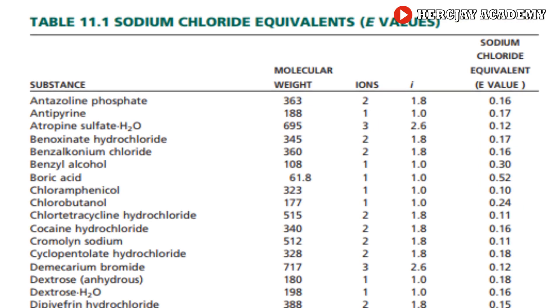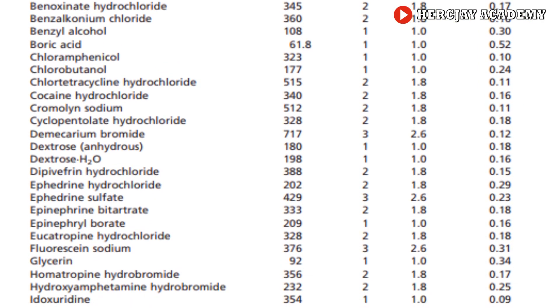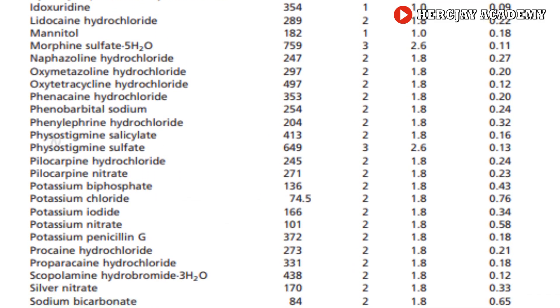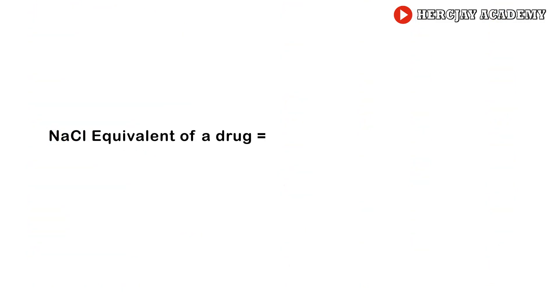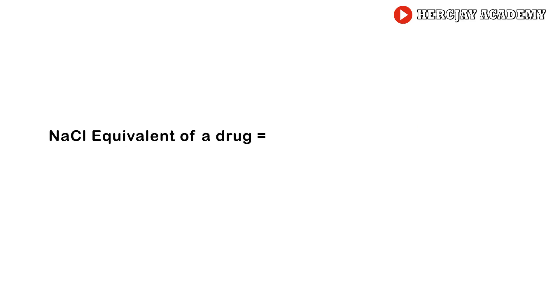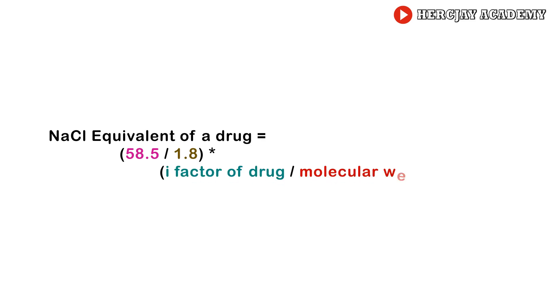The first is the formula for calculating the sodium chloride equivalent, or E-value, of a drug when you are not provided with that value in a question or a reference table. The sodium chloride equivalent of a drug equals the molecular weight of sodium chloride over the i-factor of sodium chloride, times the i-factor of the drug over the molecular weight of the drug. We take 58.5 g as the molecular weight of NaCl and 1.8 as its i-factor, giving: E = (58.5 / 1.8) × (i-factor of drug / MW of drug).